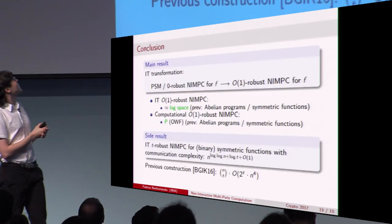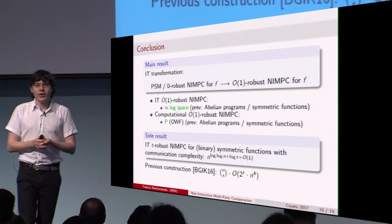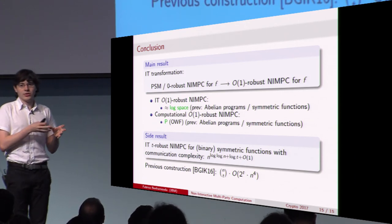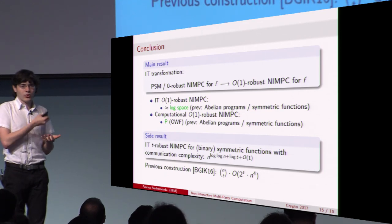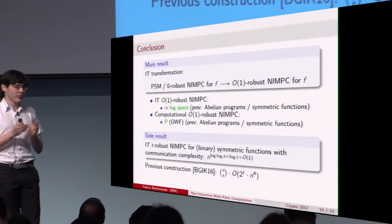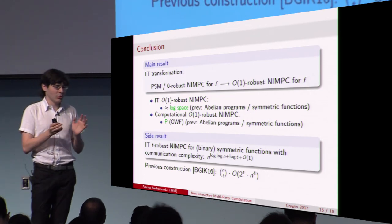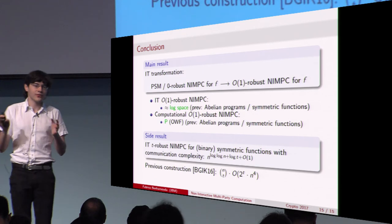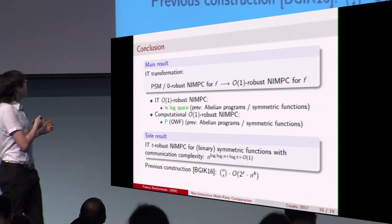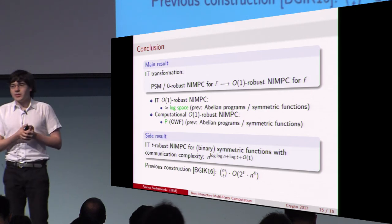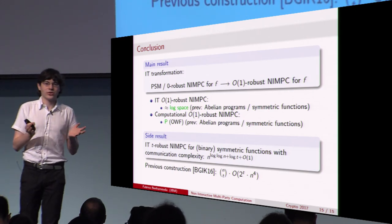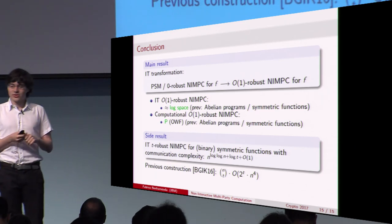To conclude, our main result is a transformation of any PSM — a weak model for which we know many constructions — into a constantly-robust NIMPC, for which we previously knew almost nothing beyond symmetric functions and iterative group products. We also have a side result about symmetric functions, but we do not manage to go beyond constant-size collusion. This talk has been entirely about constant-size collusion.